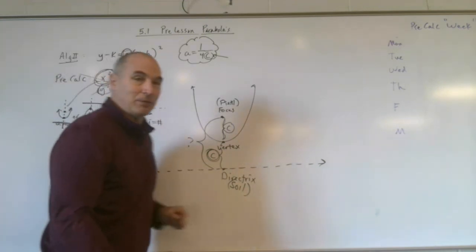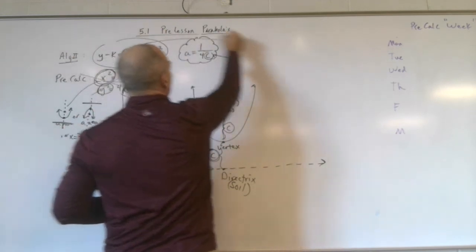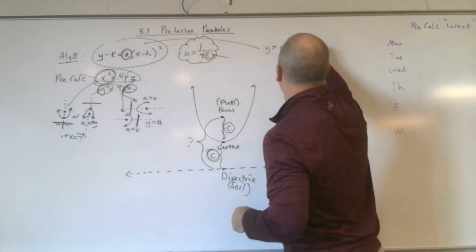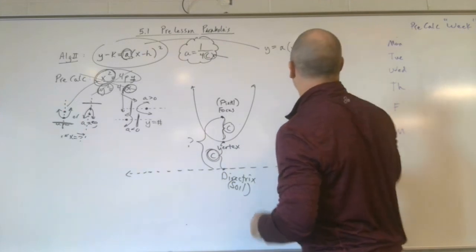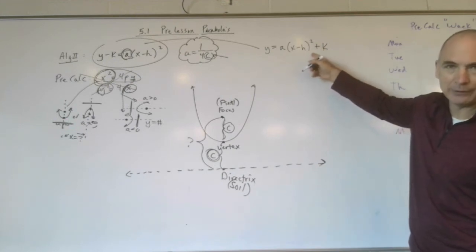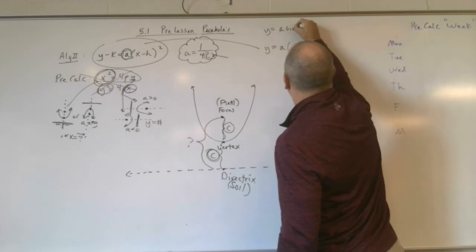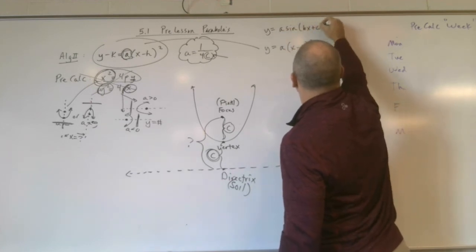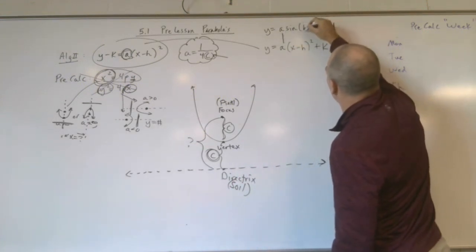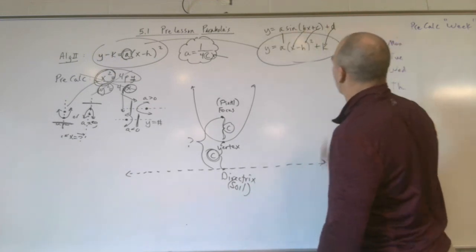Okay, with that in mind, just one more thing. This right here could also be written, y equals a, x minus h squared plus k. And to be honest with you, this is more in line with what we've been doing with stuff like this, a sine bx plus c plus d. You see, you've got your a, you've got your b, you've got your c, and you've got your d. So I'm going to lean towards this a bit.